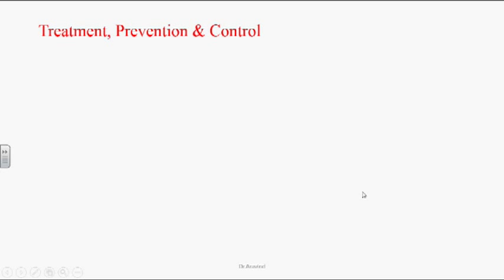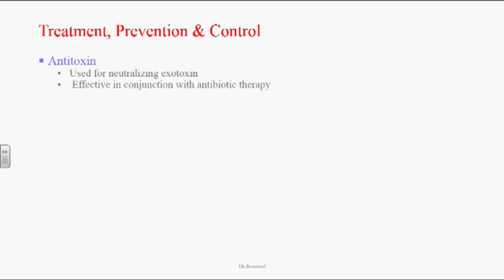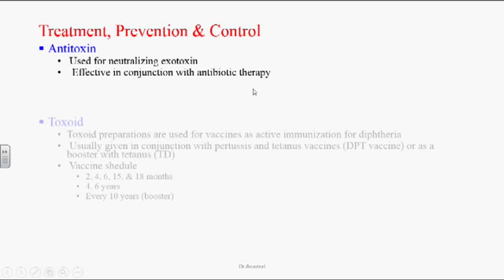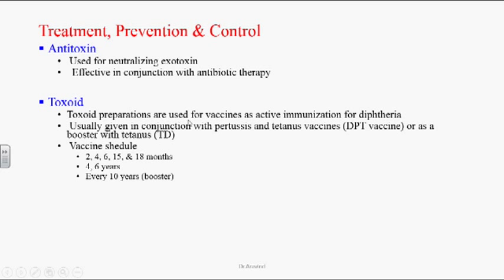Treatment, prevention, and control: This infection is treated by giving antitoxin, which neutralizes the diphtheria exotoxin, used in conjunction with antibiotic therapy. Toxoid preparations are used as active immunization. They are usually given in conjunction with pertussis and tetanus vaccines, or as a booster dose with tetanus and diphtheria. The vaccine schedule begins at 2nd, 4th, 6th, 15th, and 18th months, with additional doses at 4 and 6 years of age, followed by a booster every 10 years.